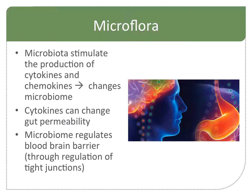The cytokines also change gut permeability — which cytokine? TNF-alpha. And the microbiome is going to regulate the blood-brain barrier through the regulation of tight junctions. Just like it can regulate the tight junctions in the gut, it can regulate the tight junctions in the brain.